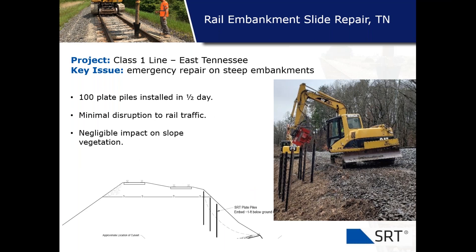GeoPeer delivered quickly — about 100 plate piles were installed in just over half a day with minimal disruption to rail traffic. The plate piles were installed from the shoulder of the work area, as this site had better access than the previous case. A smaller excavator was able to access the work area without getting directly on the tracks. Notably, this is similar equipment to that used for the GeoSpike system — a normal-sized excavator with a vibratory hammer can install both SRT plate piles and GeoSpike systems. Because the piles are driven in situ, there was negligible impact on slope vegetation and no massive earthwork required.